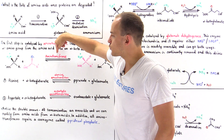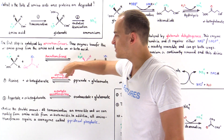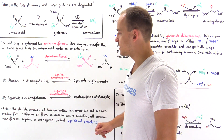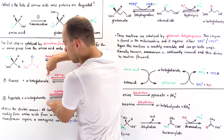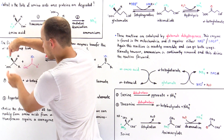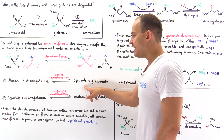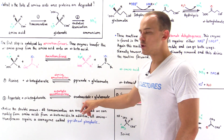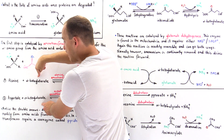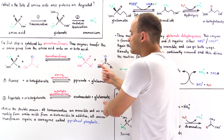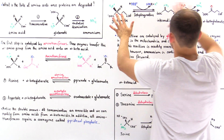Two common examples of aminotransferases are alanine aminotransferase and aspartate aminotransferase. In both cases, the alpha-keto acid used is alpha-ketoglutarate. When we remove the alpha amino group from alanine, we form pyruvate. When we do the same for aspartate, we form oxaloacetate. In both cases, transferring that amino group onto alpha-ketoglutarate forms glutamate. It is the glutamate that goes on to undergo the oxidative deamination step to abstract that ammonium.